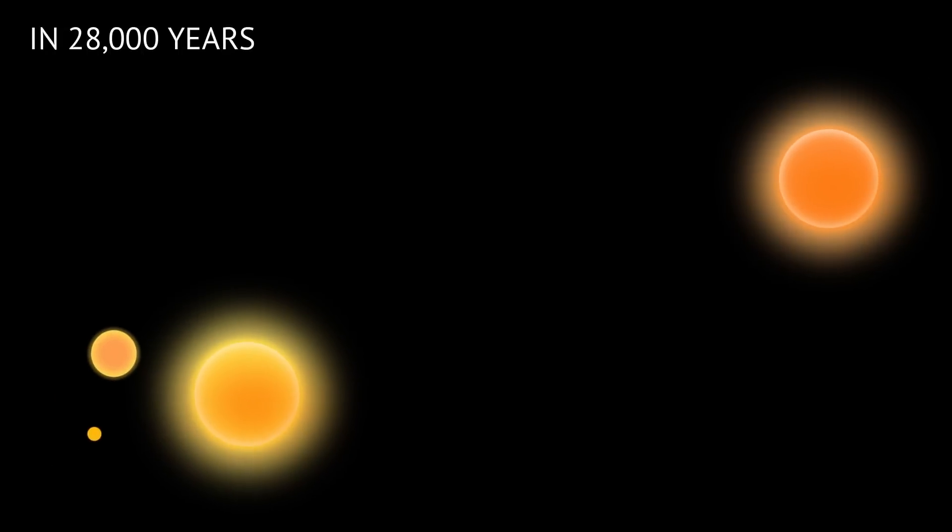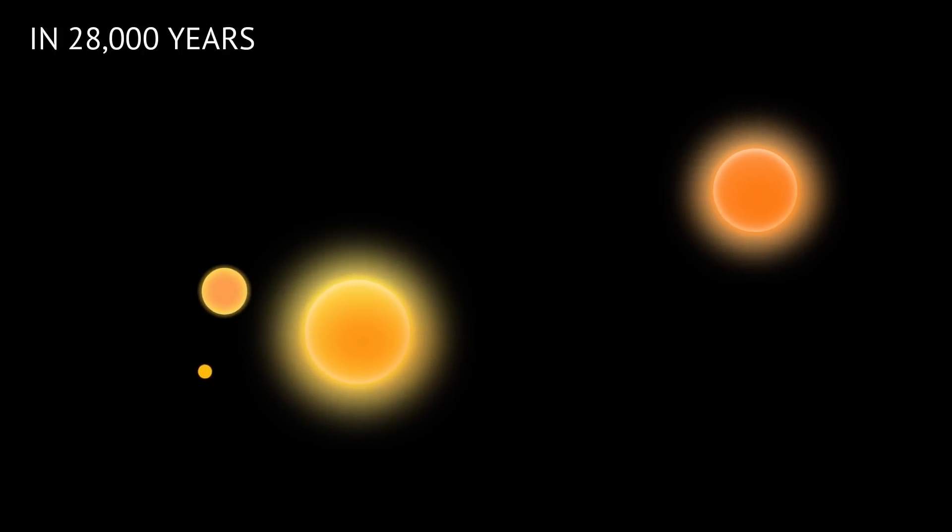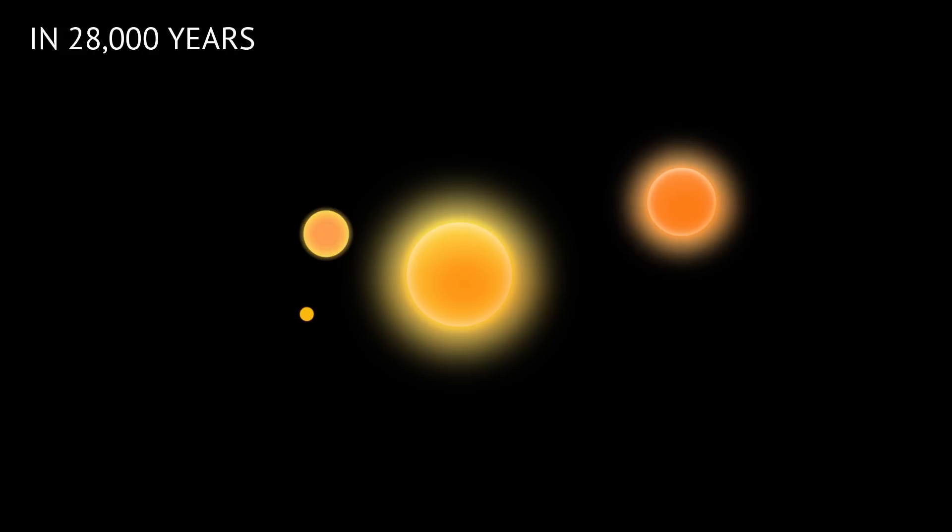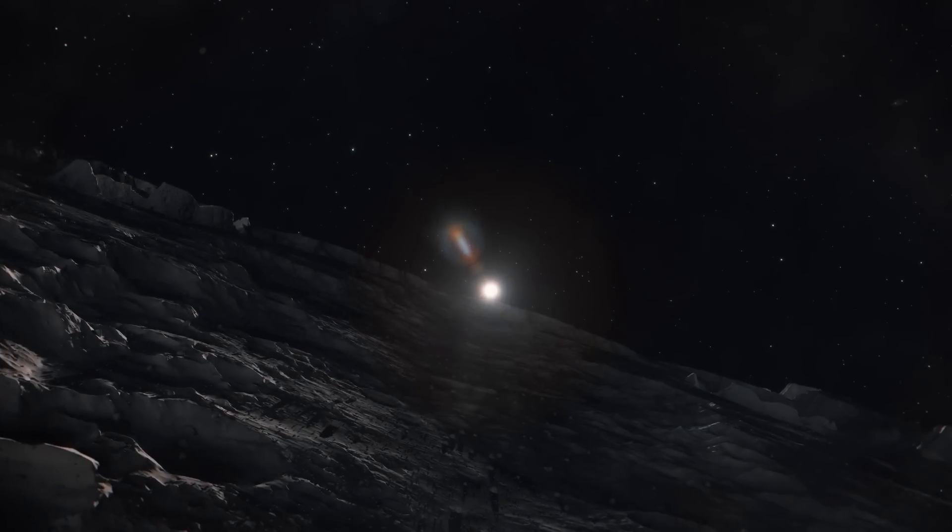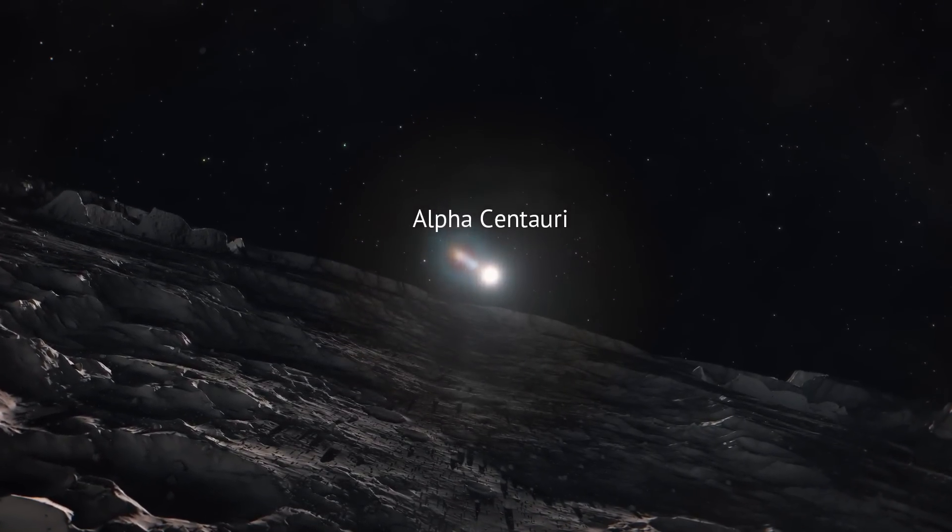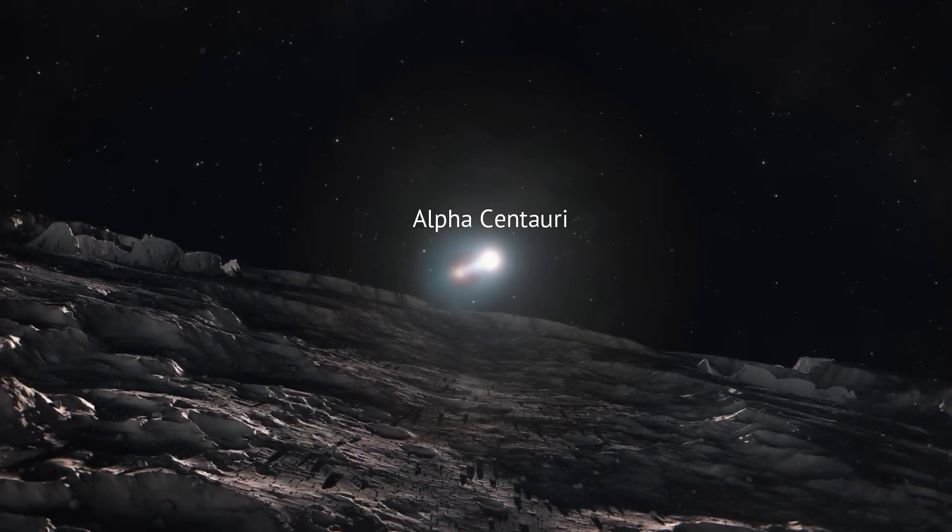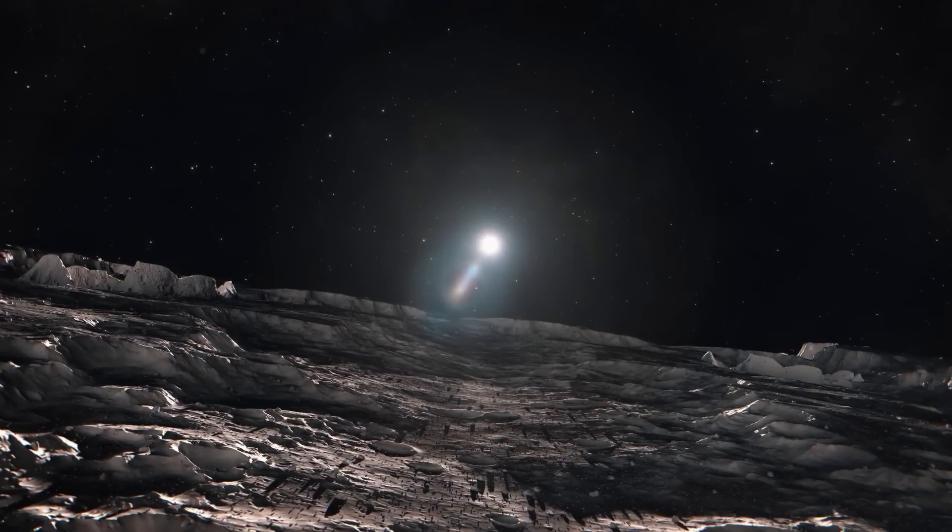In roughly 28,000 years, Alpha Centauri will reach its closest approach to us, about 200,000 astronomical units from the Sun. Scientists believe that material ejected from this system can and will reach us, and in fact, some of it may already be here.